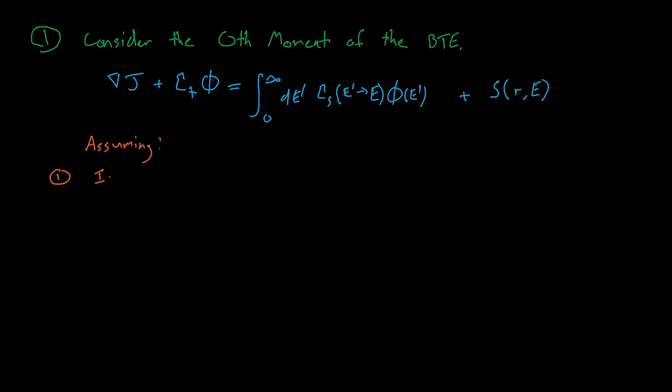To understand the slowing down flux spectrum, we begin by considering the zeroth moment of the Boltzmann transport equation. From here we make several assumptions. First, we assume that we have an infinite medium of homogenous material, which causes the current gradient to equal zero. This assumption is of course not true in any reactor, because all reactors are finite systems, but this assumption isn't so bad when we have some pretty thick water reflector regions.